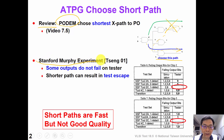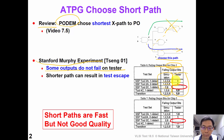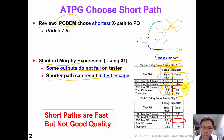In the Stanford-Murphy experiment, it has been shown that some outputs do not fail on the tester. For example, in this particular chip, the simulation shows that the fault should be propagated to many outputs. However, on the tester, we only observe the fault effect propagated to output number 9 and output number 5, but not output number 2 or number 8. This shows that if we propagate fault effect only to the short path, we can result in test escape. Suppose we only apply this test pattern — we could have test escape.